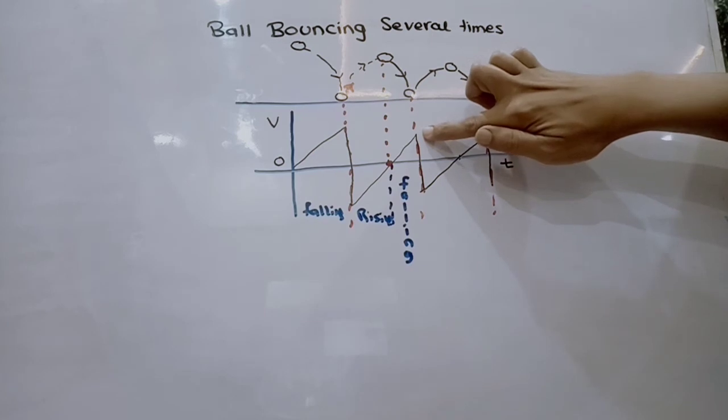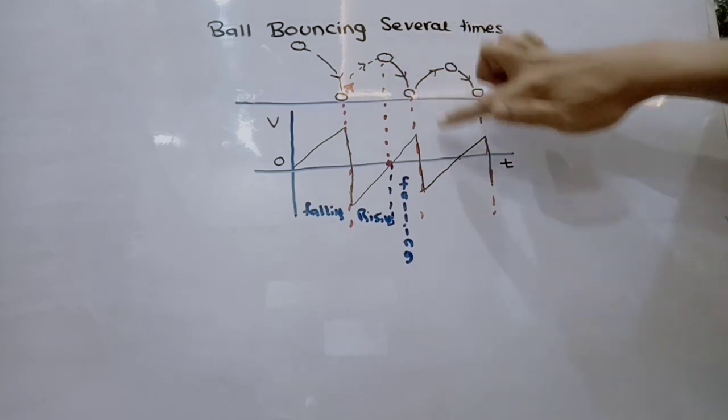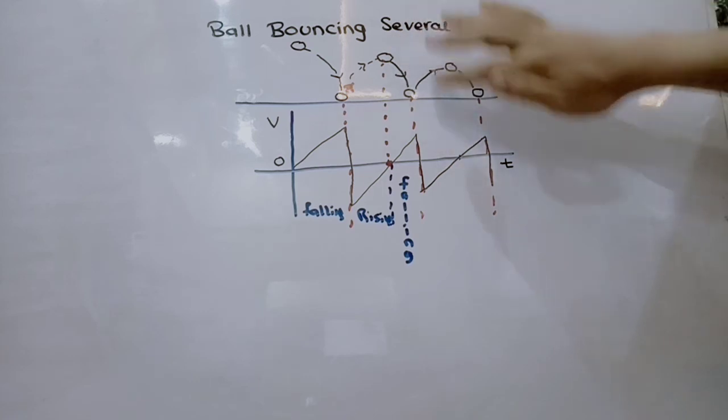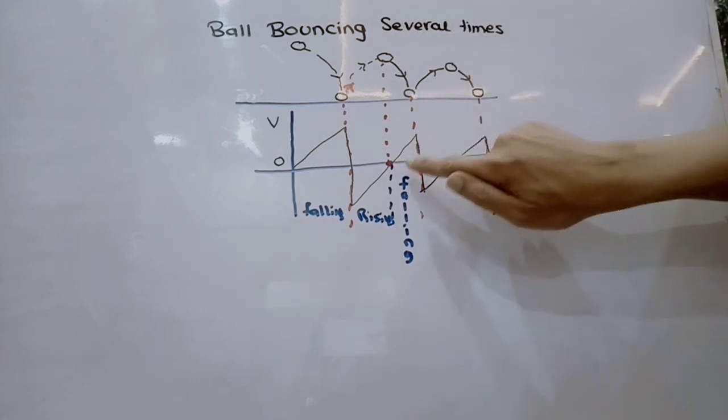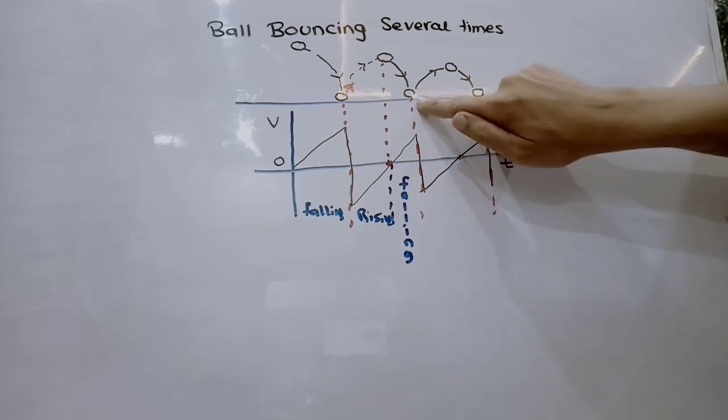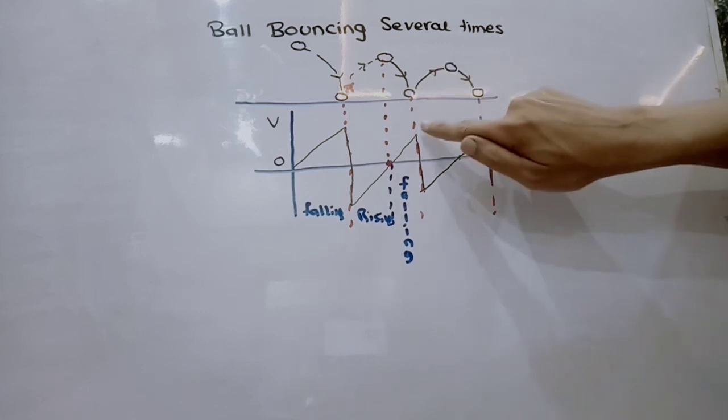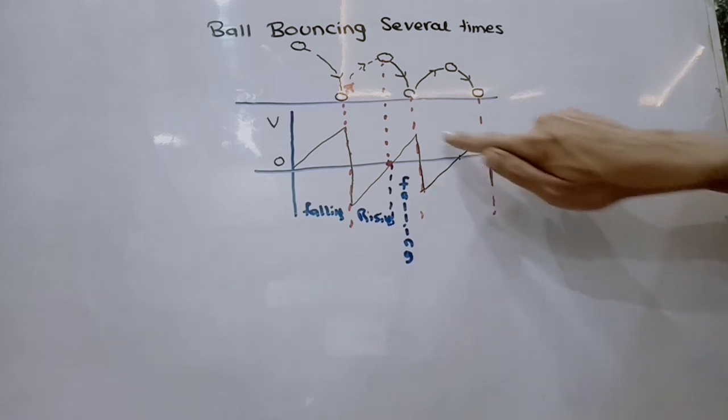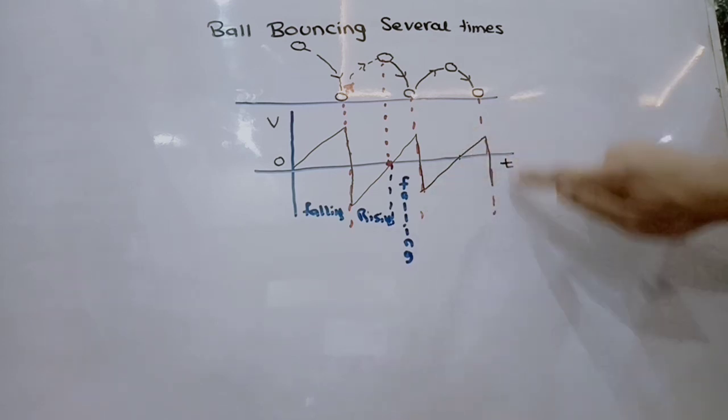The same cycle repeats. It again moves down. This shows the downward movement, and the change of direction is shown by this line. Again it moves upward with a lower velocity, and it continues.